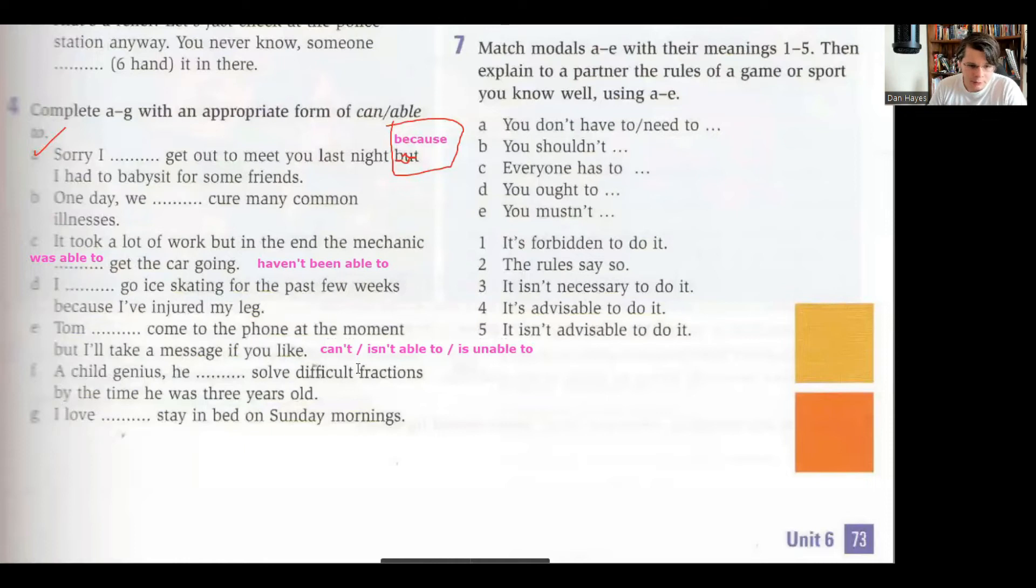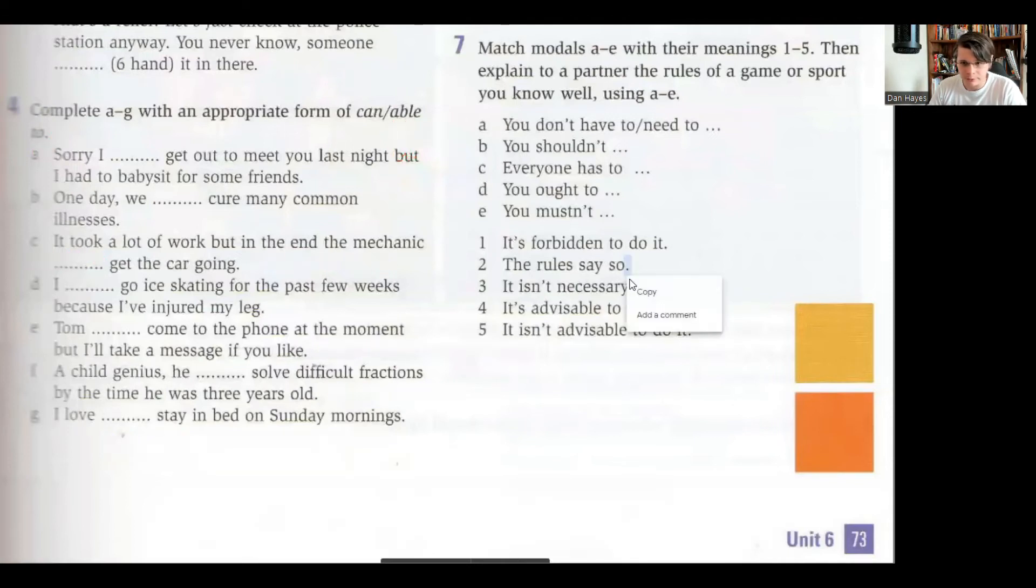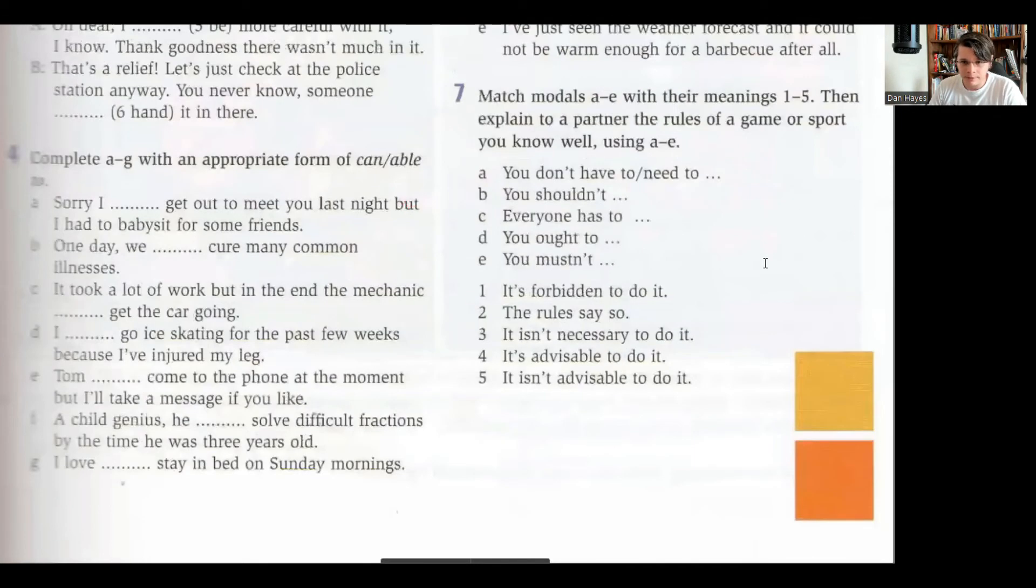As a child genius he could solve difficult fractions by the time he was three years old. So you could say here he could or you could say he was able to. I love to stay in bed, so I would say I love being able to, or I love to be able to. But obviously you can't say I love can or I love canning or something like that, that doesn't make sense. So I hope that's all clear. If that's all clear we can move on.